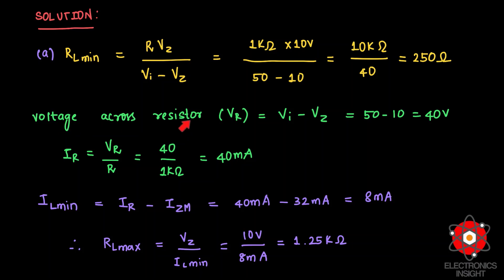Applying KVL, VR equals VI minus VZ. IR equals VR divided by R. The minimum load current is IL_min equals IR minus IZM, where IZM is specified in the circuit. Substituting the known values of IR and IZM gives IL_min equal to 8 milliamps. The maximum load resistance is RL_max equals VZ divided by IL_min, which gives 1.25 kilohms.